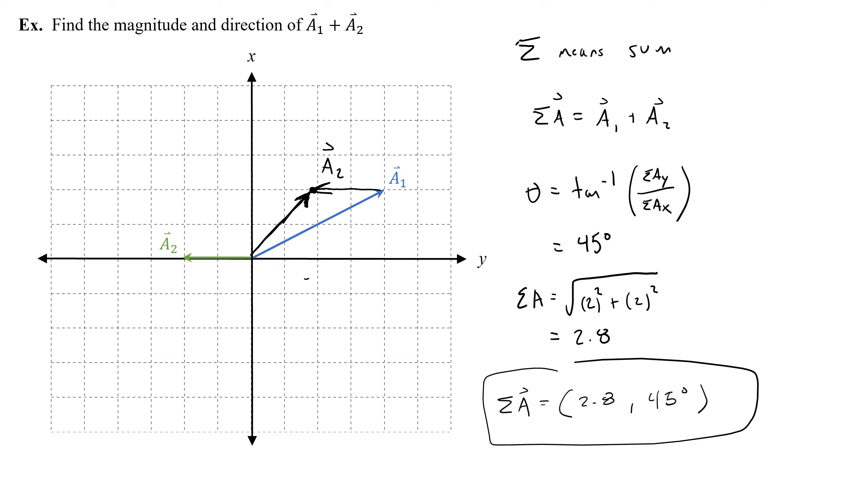And if I get rid of some of this extra stuff on the graph, it might be helpful for me to remember, this is the same place, the same resultant that I would get to if I first started with a2 and then added a1 head to tail. And again, notice that my resultant, this sigma a, that it is the diagonal of a parallelogram that's created with these two vectors.